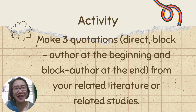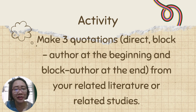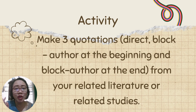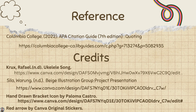Now let's apply what you've learned by doing this activity: make three quotations from your related literature or related studies. I want to see one direct quotation, one block quotation with the author at the beginning, and one block quotation with the author at the end. For more information, you may visit the references listed on screen, and credits are given to those listed on screen as well. Have a great day!